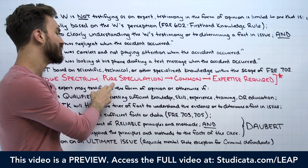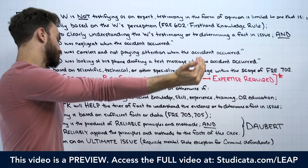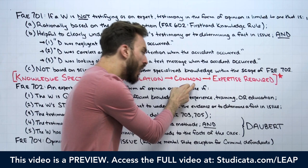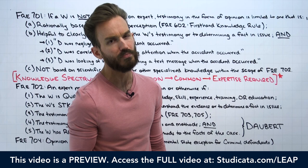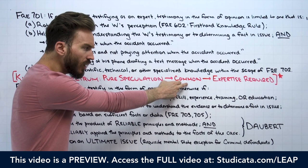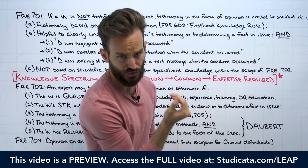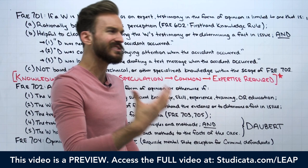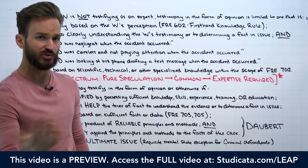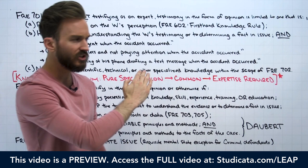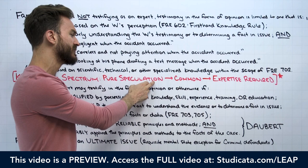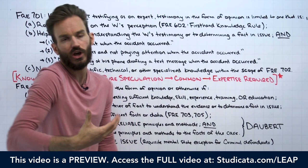Moving up the knowledge spectrum past speculation, we have opinions based on common knowledge — things anyone in the general public would probably know, things we encounter every day. A classic example is the rate or speed at which a car is traveling. Most people can generally estimate with some accuracy how fast a car is traveling just by looking at it. You can tell the difference between a car traveling 80 miles an hour versus 20 miles an hour.